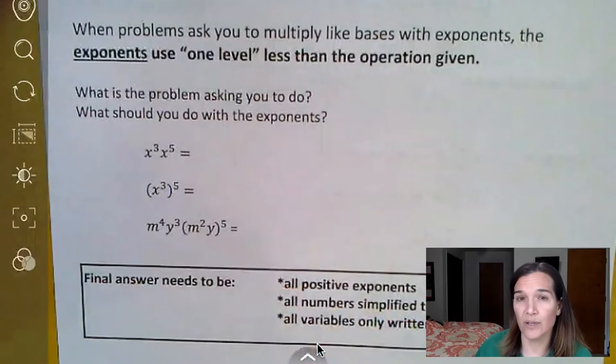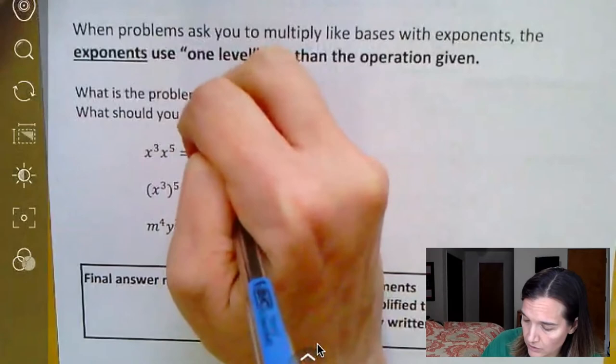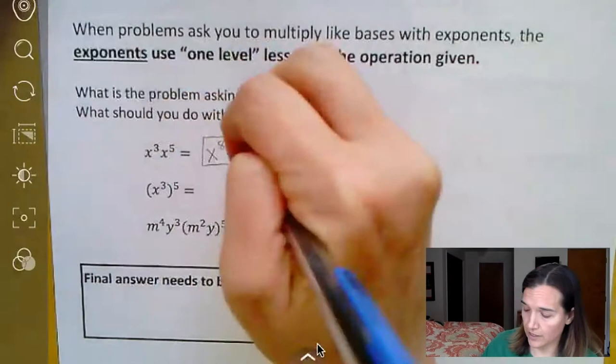They want me to multiply these two things together, which means that I'm going to do one less than multiplying, adding. So this is really going to be x to the eighth power. I'm going to add the three plus five together to get my answer.